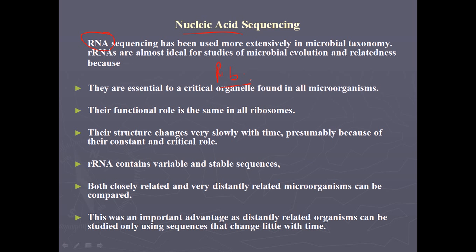We can find rRNA in primitive cells and also in very advanced eukaryotic cells — in both, they share this signature sequence in common. This gives us a scale with which we can compare the evolution of different nucleic acids to learn the relationships of organisms. Their functional role is the same in all ribosomes, and their structure changes very slowly with time because of their constant and critical role in protein synthesis.